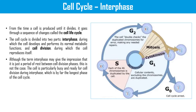As you can see in the diagram, interphase is further divided into three or four parts: G0, G1, S phase, and G2. These are all the parts of interphase. Then we have mitosis and then cytokinesis.